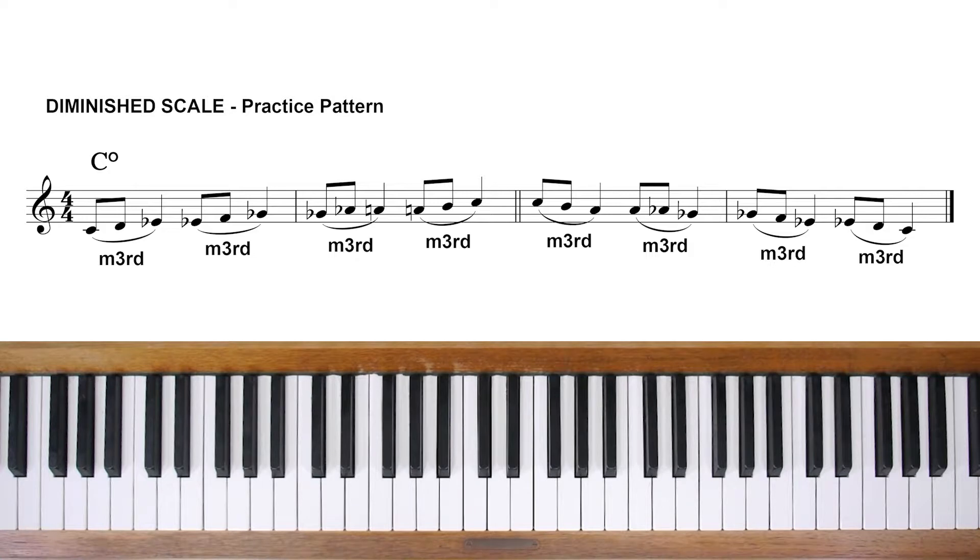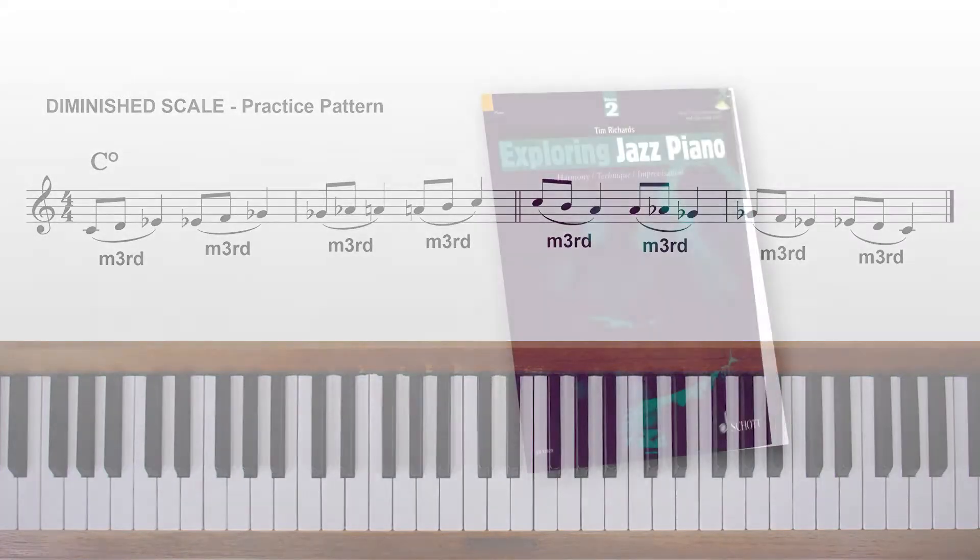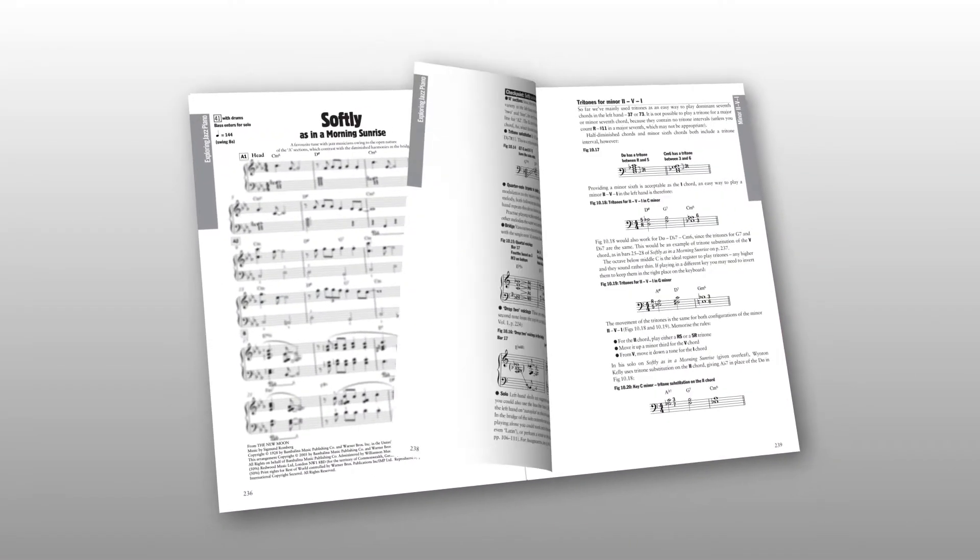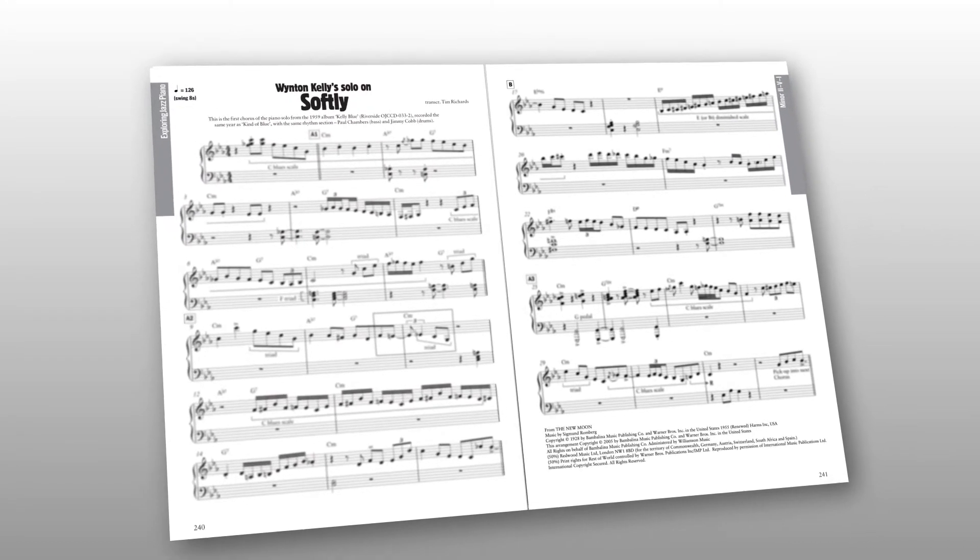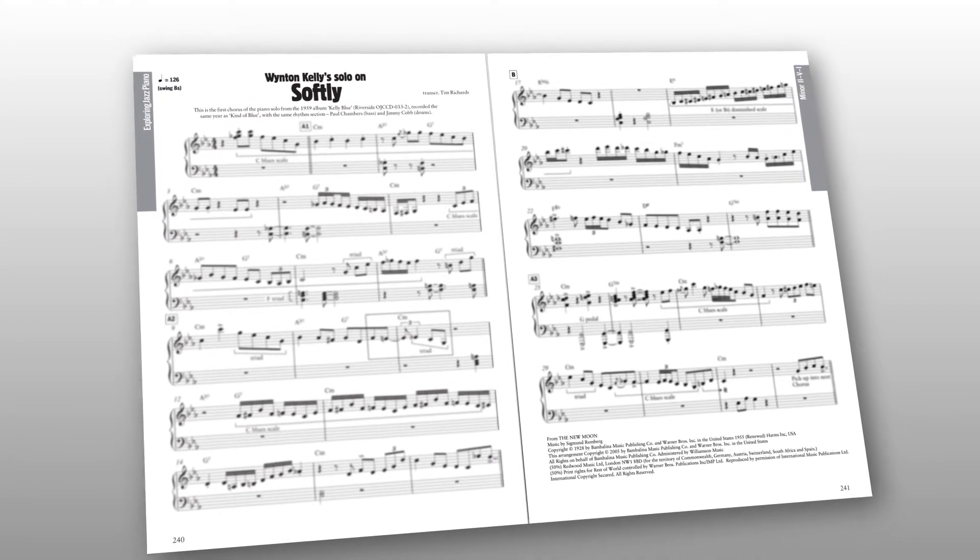Once you know it, you can use the diminished scale as an alternative to the arpeggio whenever you have to improvise over a diminished chord in a tune. This will be especially useful if the chord lasts a whole bar or longer, unlike the one which lasted only two beats in Don't Stop the Carnival. A good example is the two bars of E diminished seventh in the bridge of Softly as a Morning Sunrise. You can find this in the book on page 236.